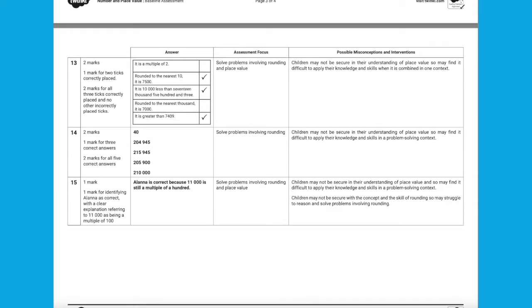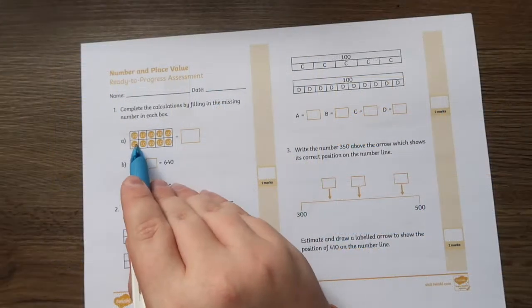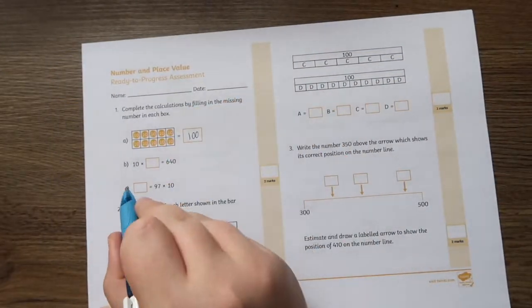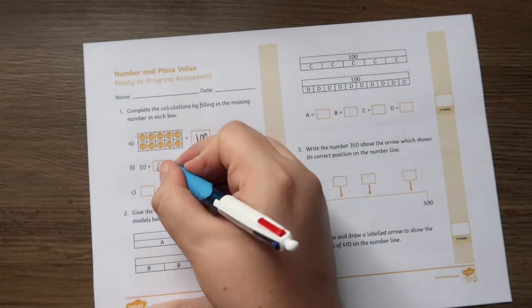As well as the baseline assessments, we also have the ready to progress assessment resources. The packs use the statements provided in the new maths curriculum guidance from 2020 to assess children's understanding of number and place value.